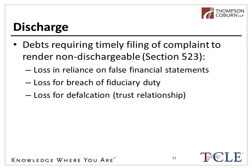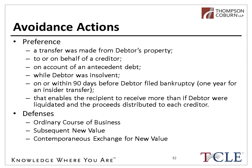Briefly, I want to discuss avoidance actions — no presentation on Bankruptcy 101 would be complete without at least acknowledging their existence. One type of avoidance action is a preference, and I'm also going to talk about fraudulent transfers. Avoidance actions are brought within the bankruptcy case, usually as an adversary proceeding, that the trustee brings against people who received money prior to the bankruptcy case in order to get that money back and make a distribution to creditors generally.